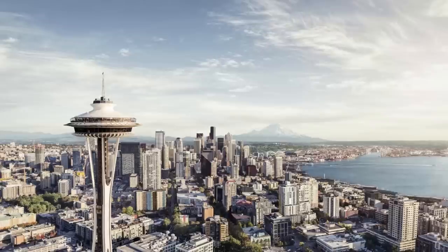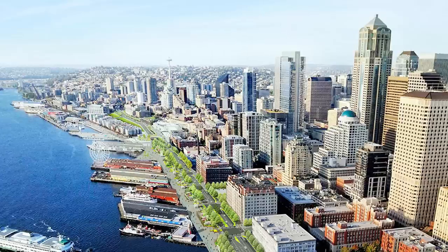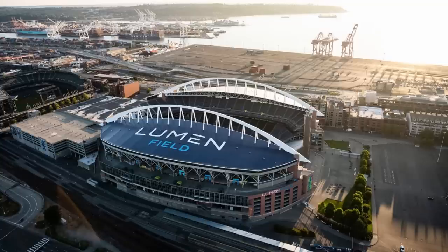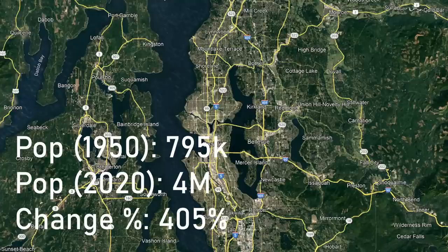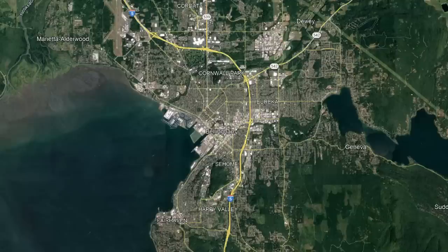Next up, we move to the biggest metropolitan area in this whole region of the continent — Seattle. Seattle is an incredibly influential city in the US, home to one of my favorite skylines. With such landmarks as the Space Needle, and its waterfront that has gone through changes with the destruction of its viaduct, Seattle is home to major league sports teams like the Mariners and Seahawks, with their stadiums located just south of downtown. It's also home to the only floating vehicular bridges in the US. The Seattle Metro had a population of 795,000 in 1950, improving to 4,019,000 in 2020, with a growth rate of 405%.